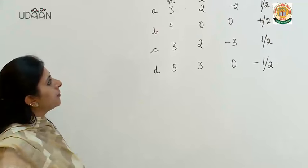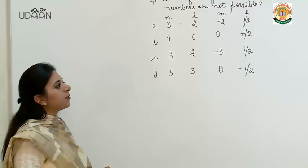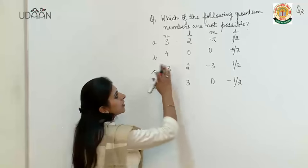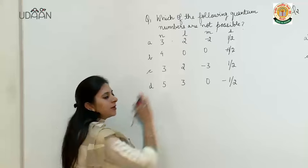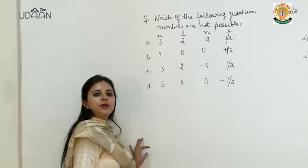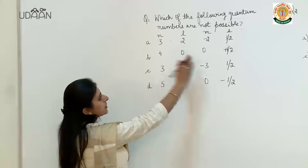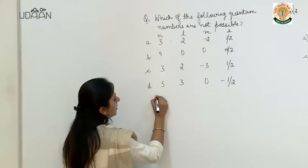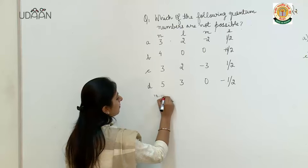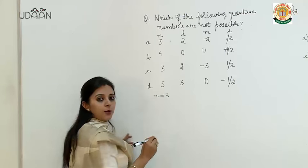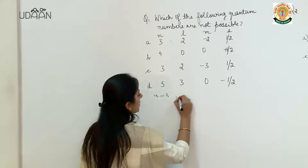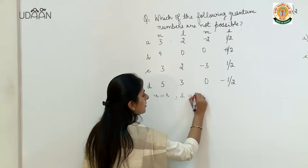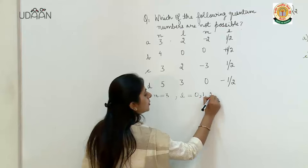Which one of the following quantum numbers are not possible? Let us understand how we see which quantum number is possible. In the first case, if n value is 3, then l can be 0, 1, or 2.